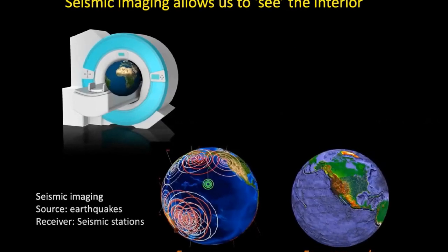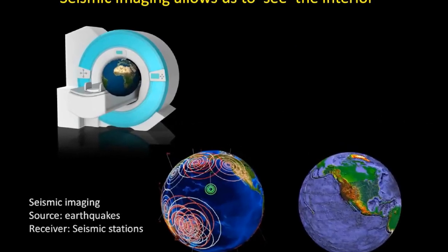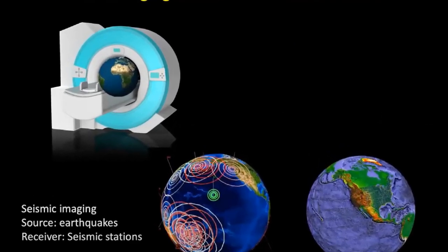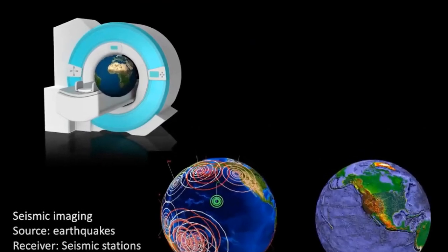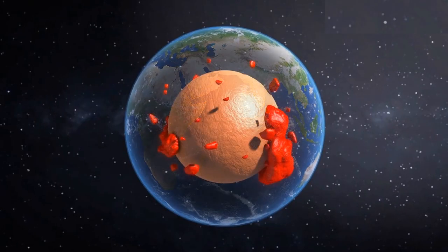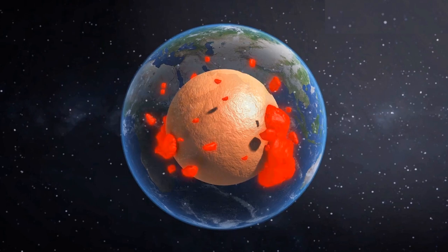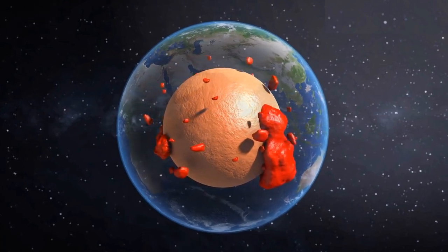Using instruments that measure seismic waves, scientists know that these two blobs have complicated shapes and structures, but despite their prominent features, little is known about why the blobs exist or what led to their odd shapes.